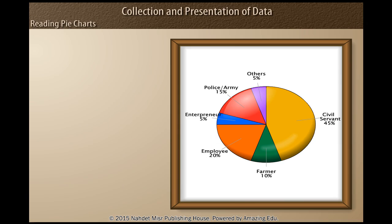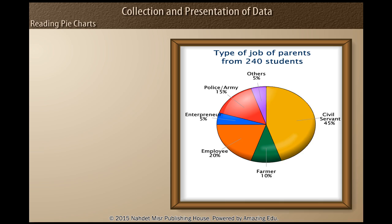Let's learn about this chart. This is called a pie chart. Pie charts are in the shape of a circle. This chart shows the types of jobs of parents from 240 students at a school. The number of student parents in each type of job is represented by parts of a whole circle.